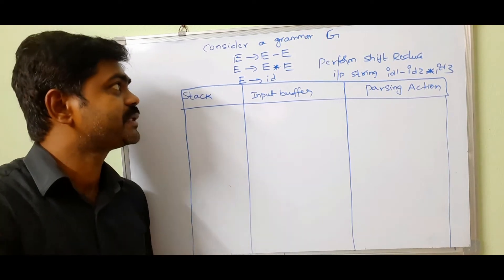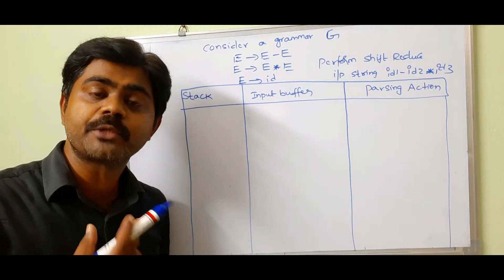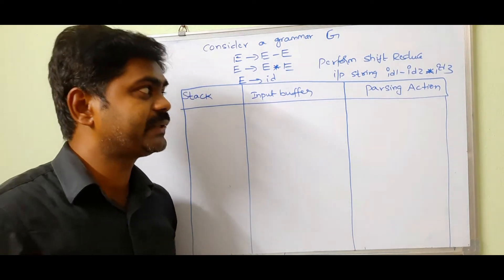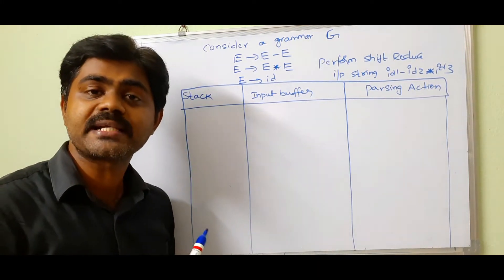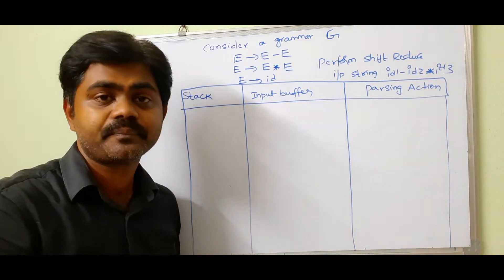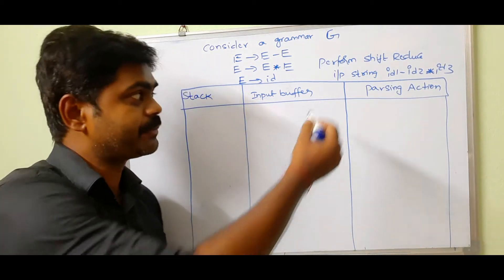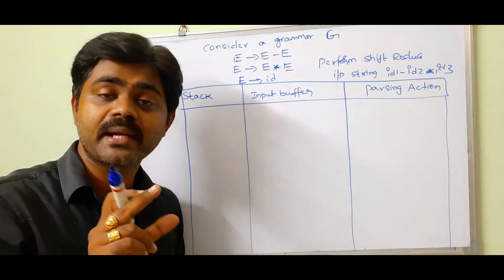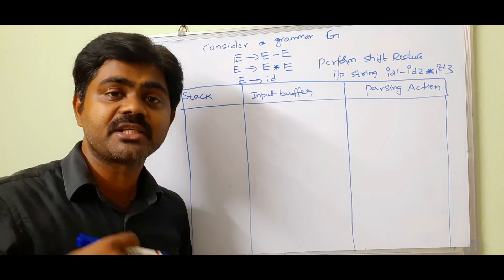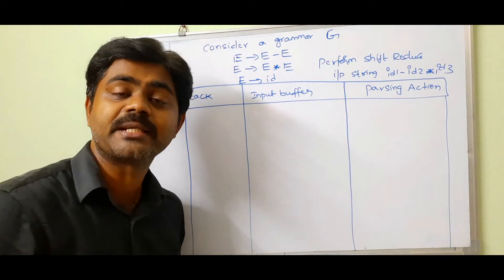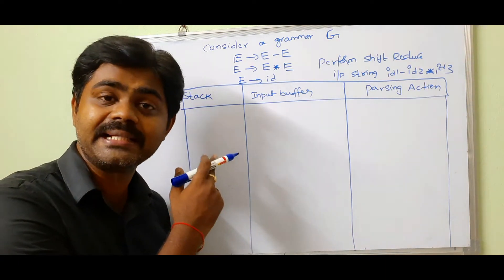Consider the grammar: E → E - E, E → E * E, E → id. We need to perform shift-reduce parsing for the input string id1 - id2 * id3. We construct a table with three columns: stack, input buffer, and parsing action. The stack starts with dollar, and the input buffer is id1 - id2 * id3 $.